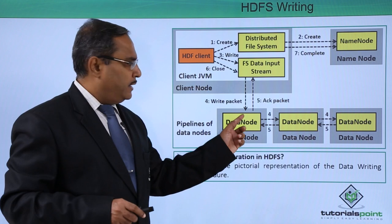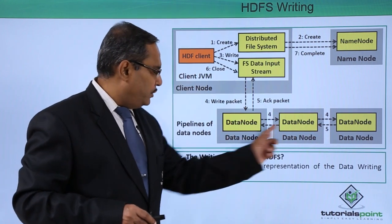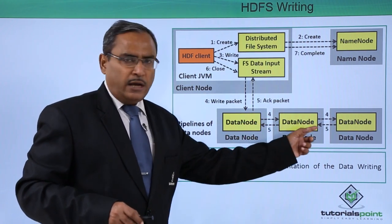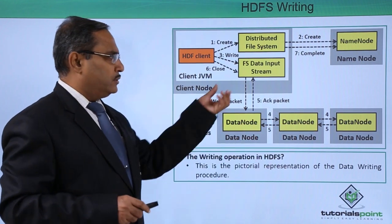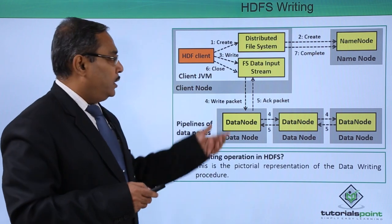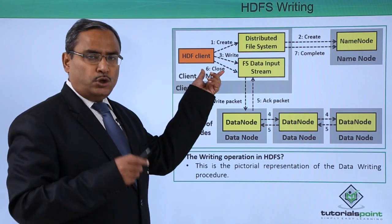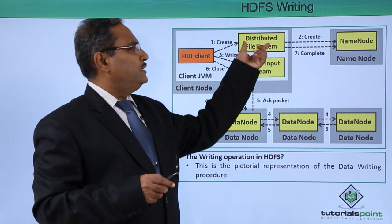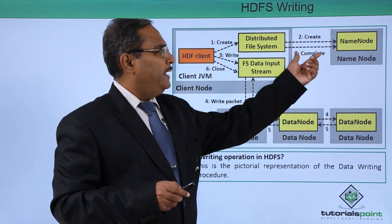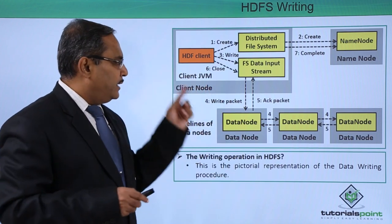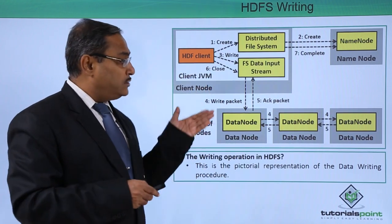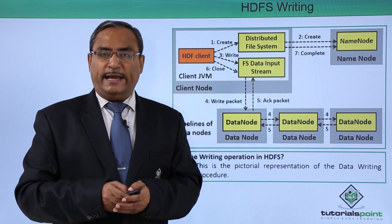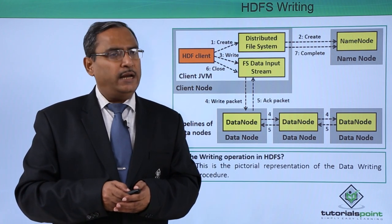The writing packet is sent and acknowledgement is received. Steps 4 and 5 — the write packet and acknowledgement — are conveyed between multiple DataNodes because the data gets replicated to other nodes as well. The HDFS client then puts a close notification to the FS data input stream. After that, the distributed file system indicates complete to the NameNode. In this way, the HDFS write operation takes place in 7 steps, clarifying how HDFS write works in the Hadoop system.